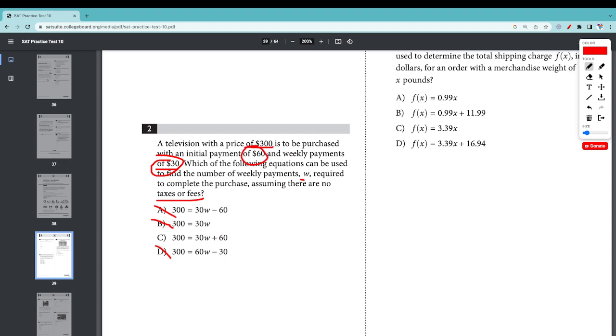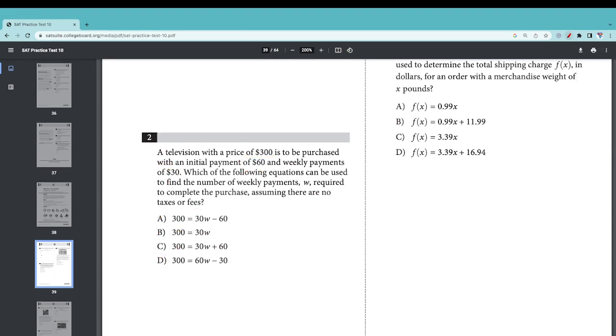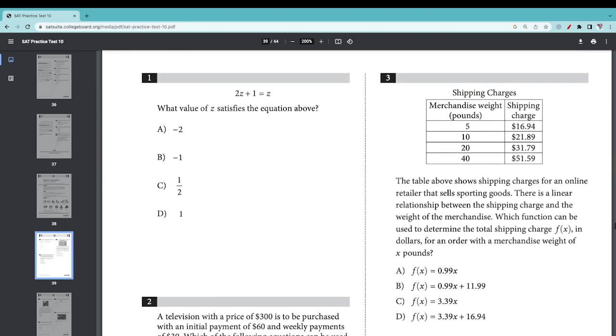Number three: The table above shows shipping charges for an online retailer. There is a linear relationship between the shipping charge and the weight of the merchandise. Which function should be used to determine the total shipping charge f(x) in dollars for an order with merchandise weight of x pounds?